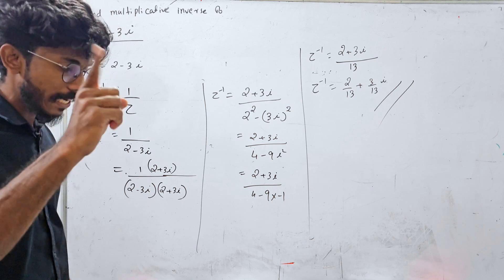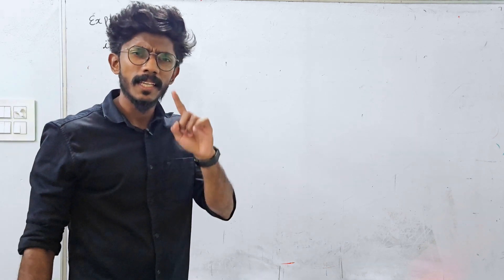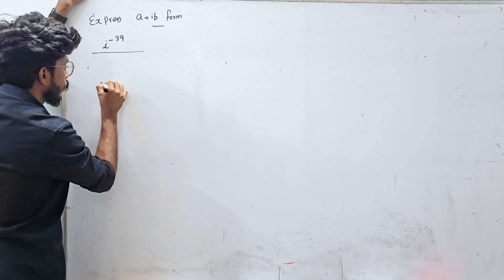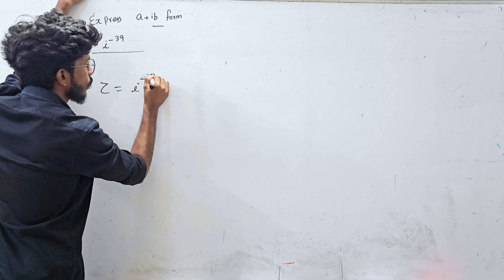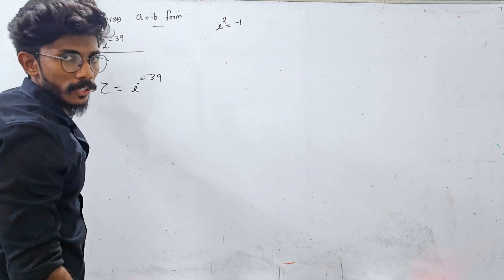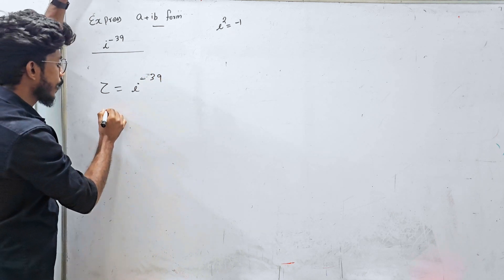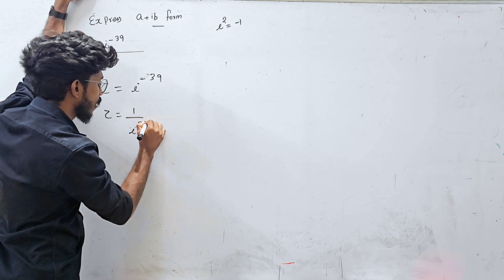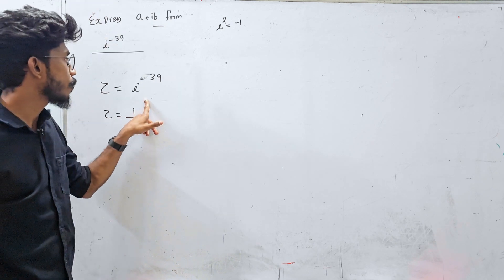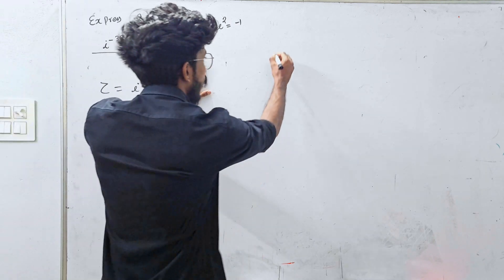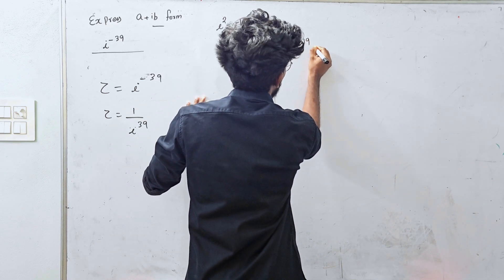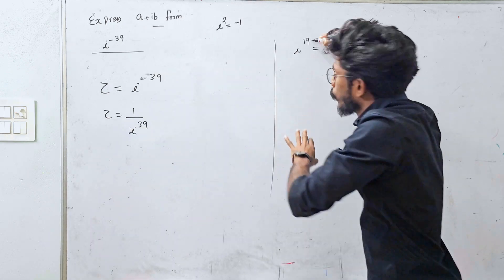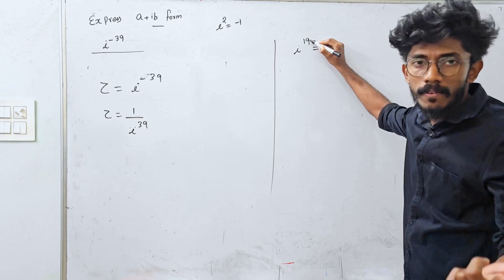Now check this exam question: i raised to minus 39, express in a plus ib form. We can write i raised to minus 39. First let's solve i raised to 19. To find i raised to 19, we can use i squared. If the power is odd, we write it using i squared. 19 is odd, so we split it.